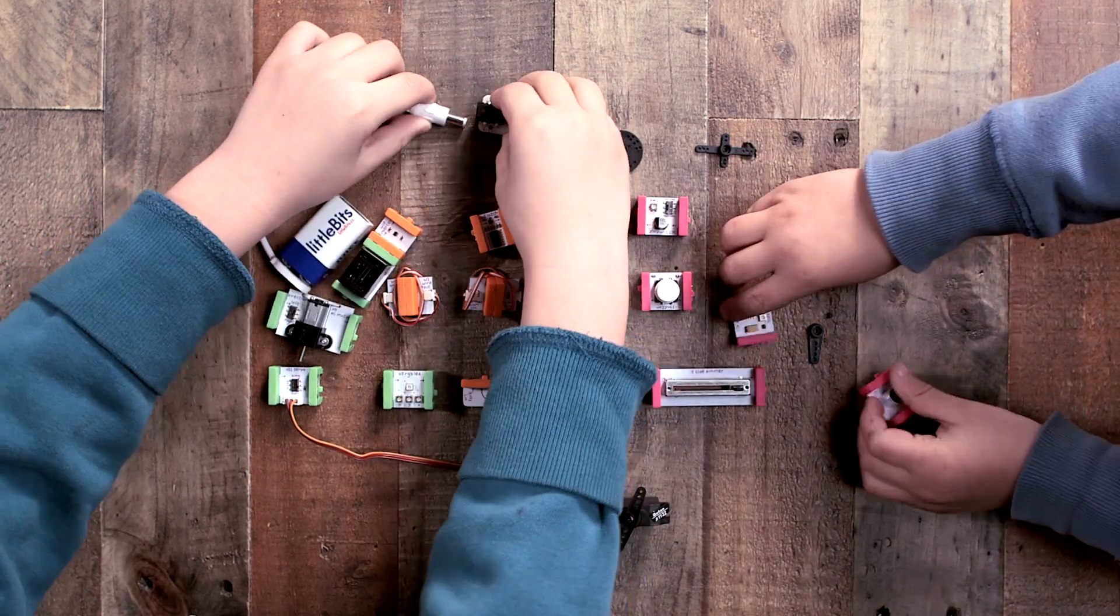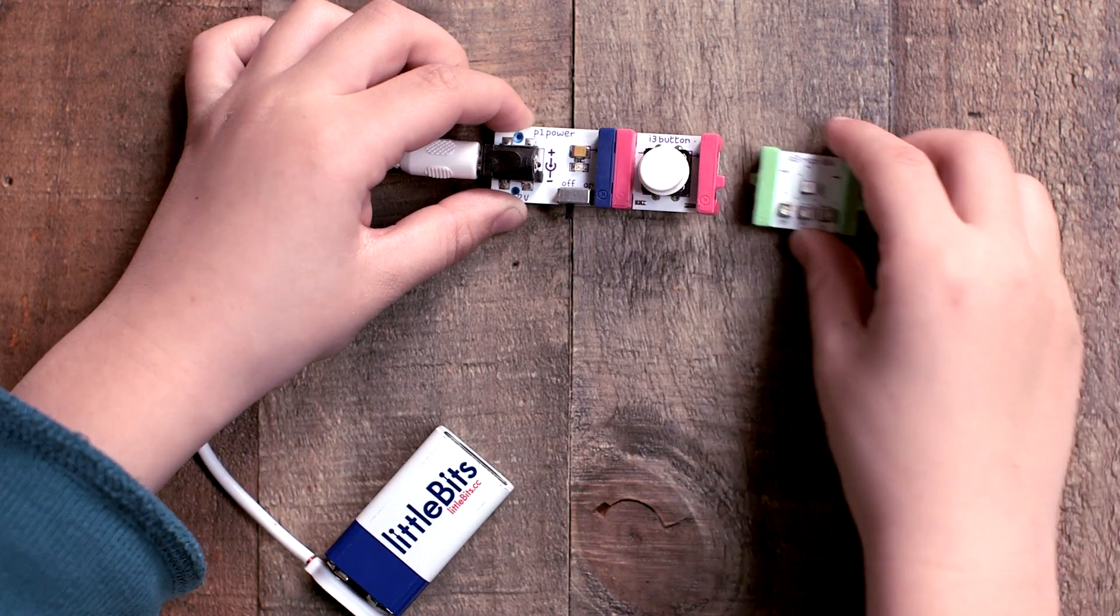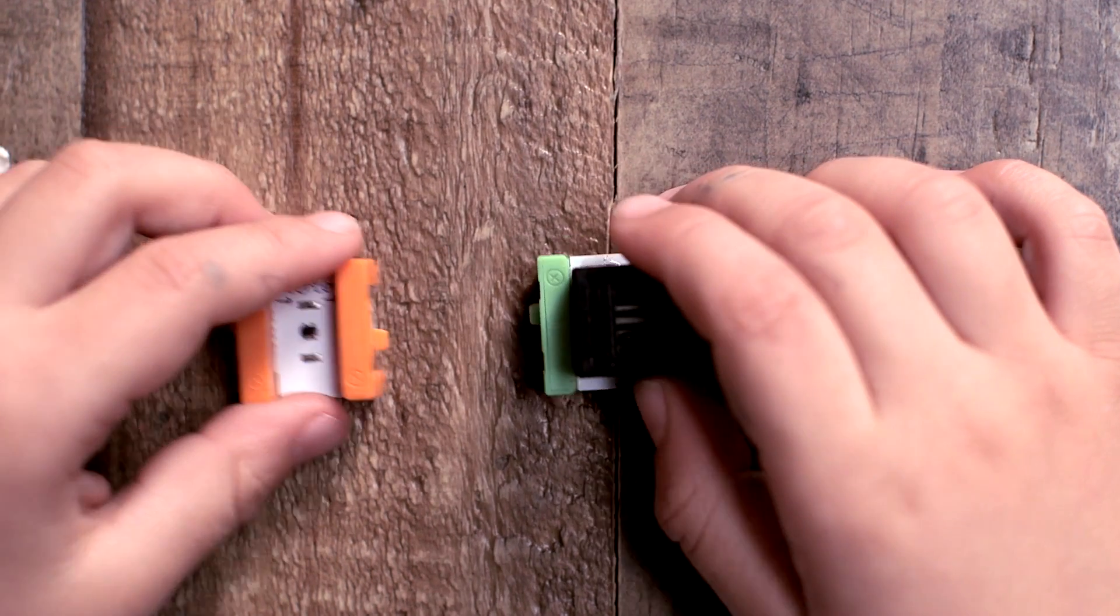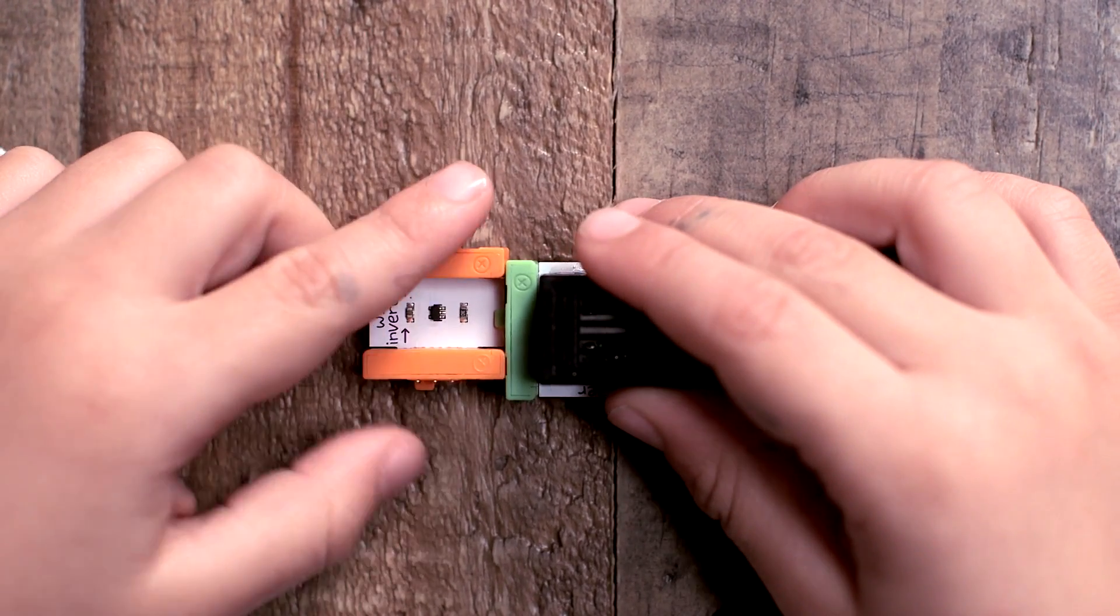which is the idea behind Little Bits. The small modules snap together magnetically to form circuits, and the polarity of the magnets keeps your kids, or you more likely, from trying to put them together the wrong way.